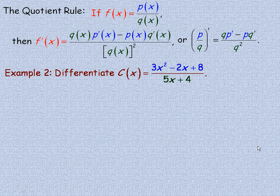That's one way to differentiate a quotient. Another way is to use the quotient rule. The quotient rule says that if f of x equals p of x over q of x, then f prime is q of x times the derivative of the numerator, p prime of x, minus the original numerator times the derivative of the denominator, all over the denominator squared.